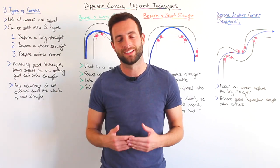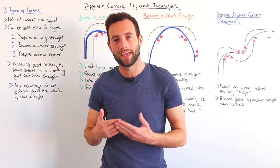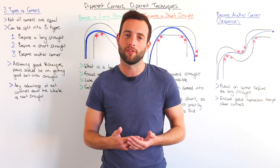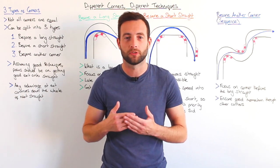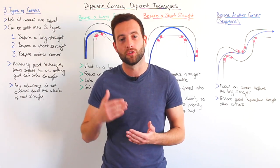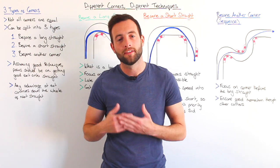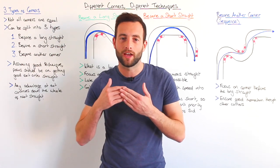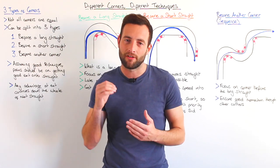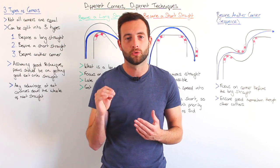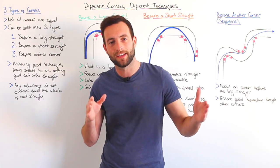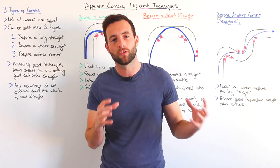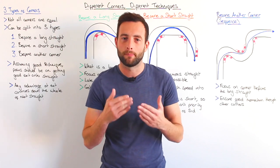Now assuming you have good technique and good consistency on the way into the corner, the priority should always be to get as good an exit as possible onto the next long straight. The reason for this is if you get a good exit and carry a few miles an hour more onto a long straight, you continue to carry that advantage along the whole straight, and this results in a big decrease in lap time.